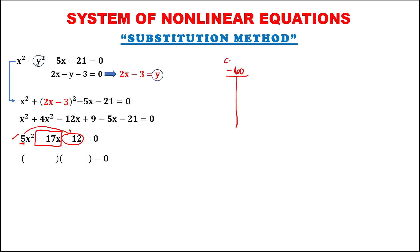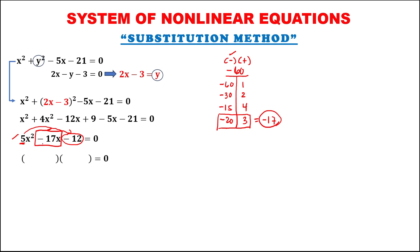Since this product is negative, one of the factors is negative and one is positive. Since the middle term is negative, the bigger number must be negative. So we have negative 60 times 1, negative 30 times 2, negative 15 times 4, or negative 20 times 3 — all give negative 60. Observe that negative 20 plus 3 equals negative 17, which is the middle term. Therefore, the factors for negative 60 are negative 20 and positive 3.